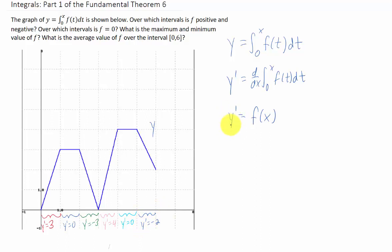Every time we find the slope of y, we're finding the function value of f. So if we're asking where f is positive, we're asking where is y prime positive. Well, y prime is positive right here and right here. So f of x is positive on the interval 0 to 1 and 3 to 4.